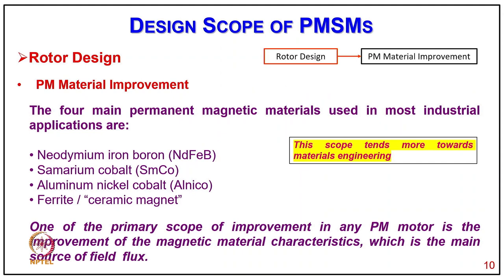The four main permanent magnet materials used in most industry applications are neodymium iron boron, which is considered the best material today, samarium cobalt, which is among the rarest materials, aluminum nickel cobalt, and ferrite also called ceramic magnet. One of the primary scopes of improvement in any PM motor is improving the magnetic material characteristics, which is the main source of field flux.